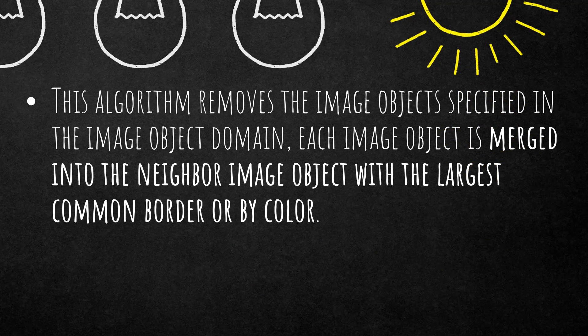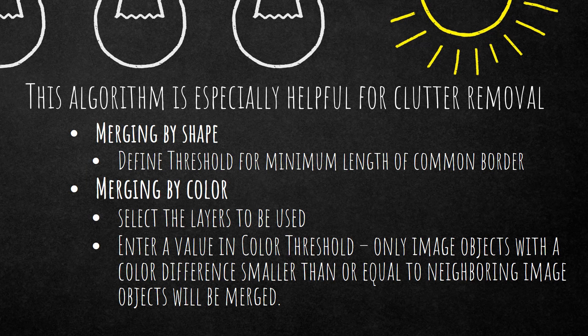This algorithm removes the image objects specified in the image object domain, and each image object is merged into the neighbor image object with the largest common border or by color. We have two different settings to choose from. This algorithm is especially helpful for clutter removal. Merging by shape is the default setting, which means it merges into the image object that it shares the longest common border with.